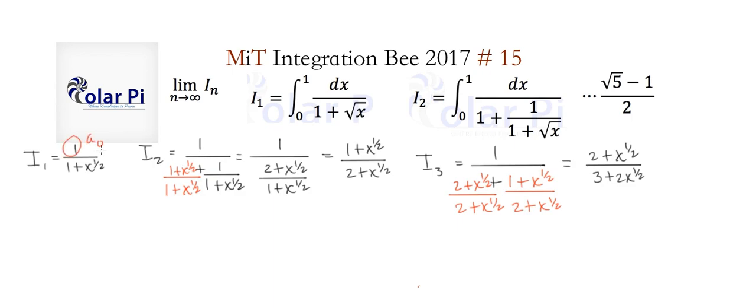If we let this guy be a0 and its denominator be a1, then this is a1 and this is going to be naturally a2, then this is a2 and this is going to be, the denominator is going to be a3.